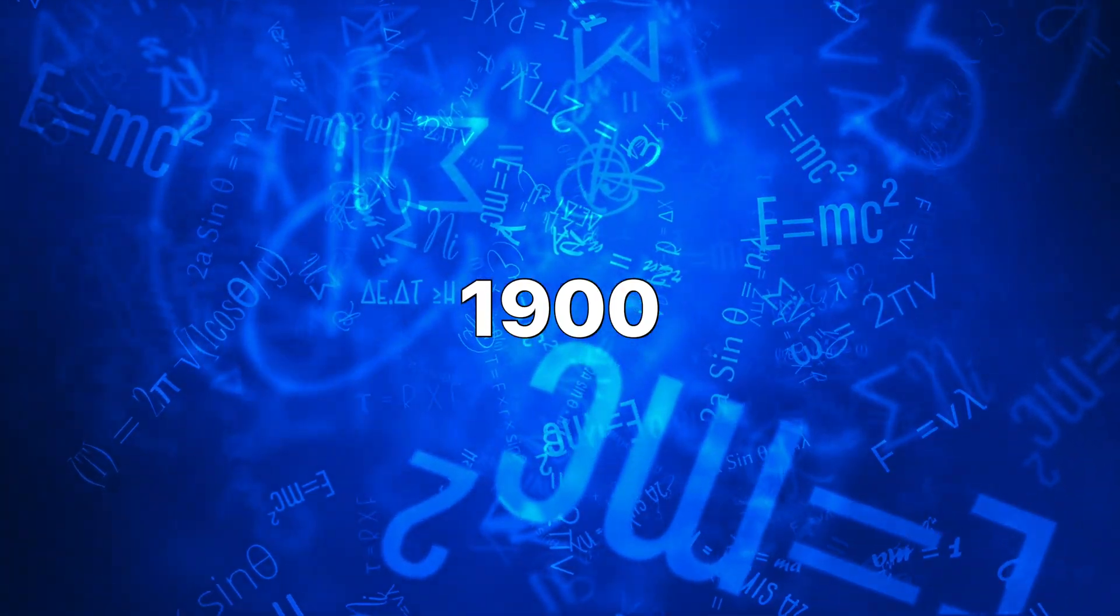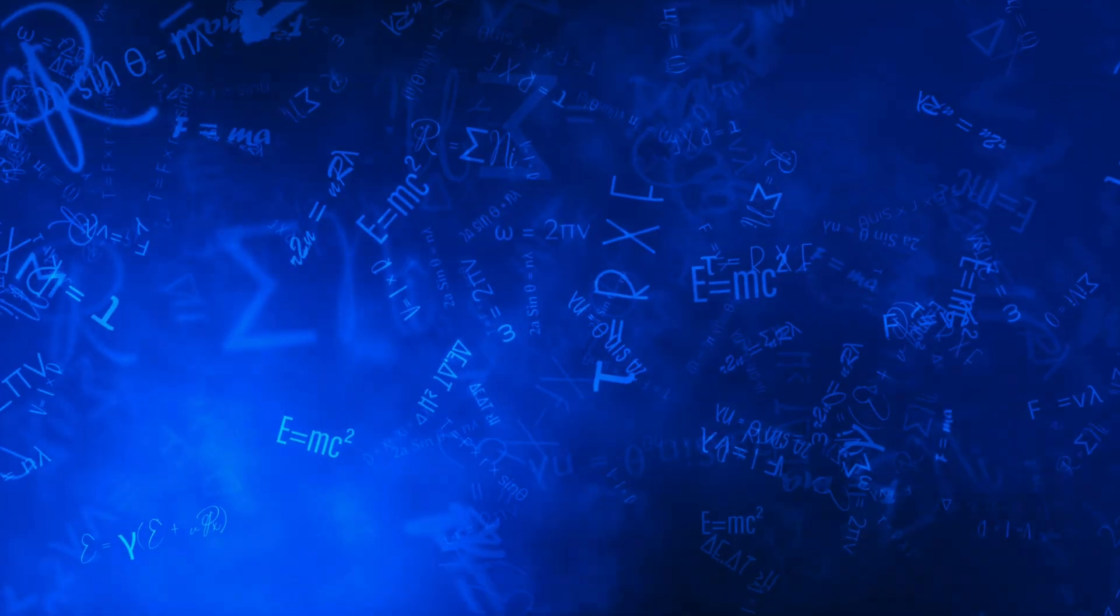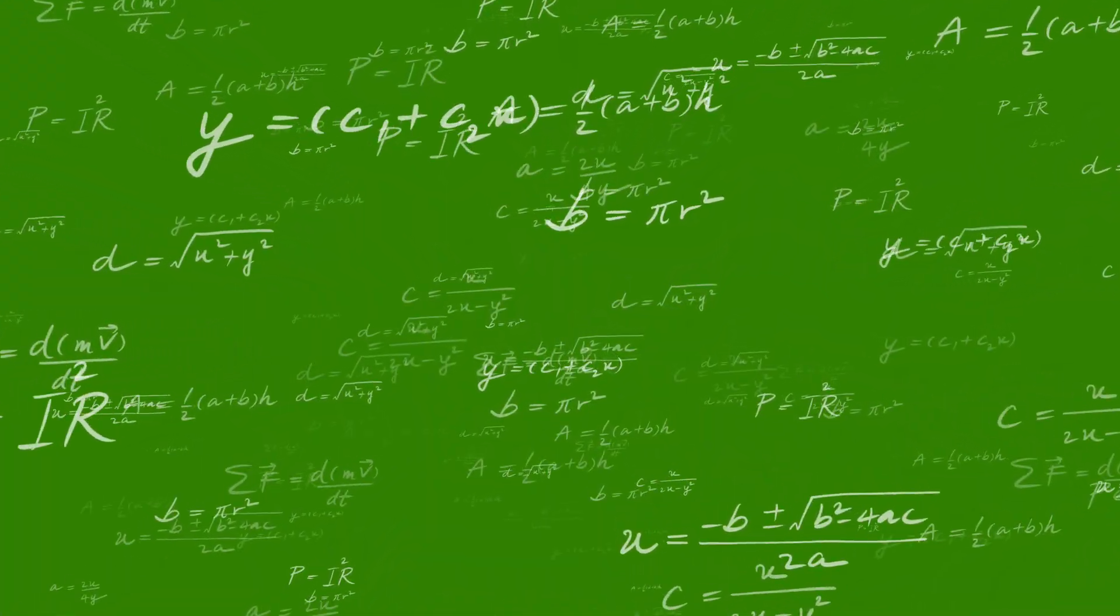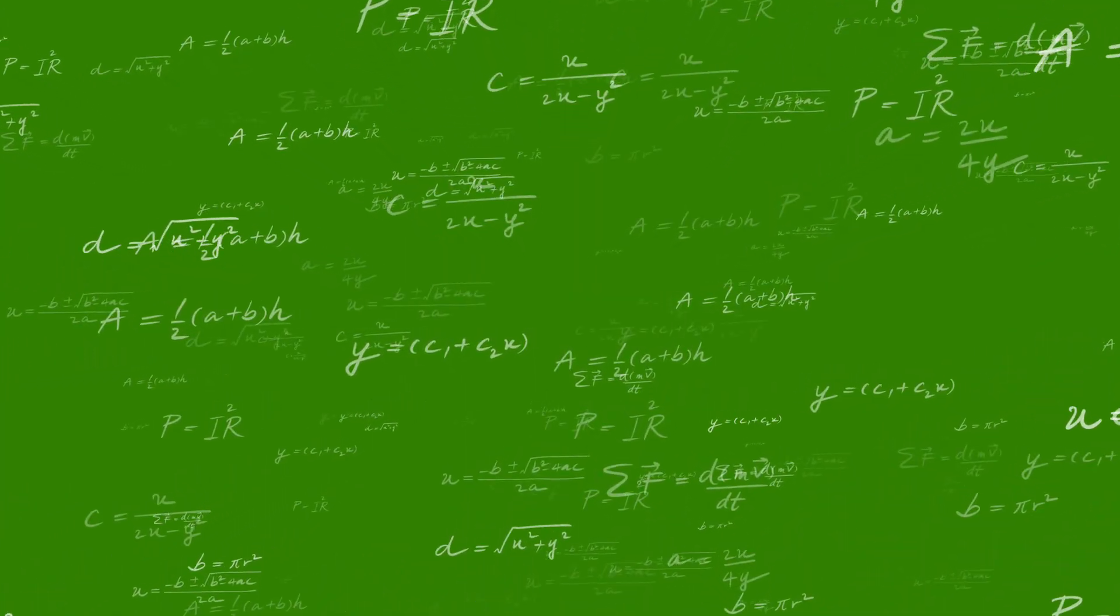In 1900, renowned mathematician David Hilbert presented a list of 23 unsolved problems that he believed would shape the future of mathematical research. Among these challenges was Hilbert's Sixth Problem, a bold call to extend the rigor and precision of mathematics to the realm of physics.